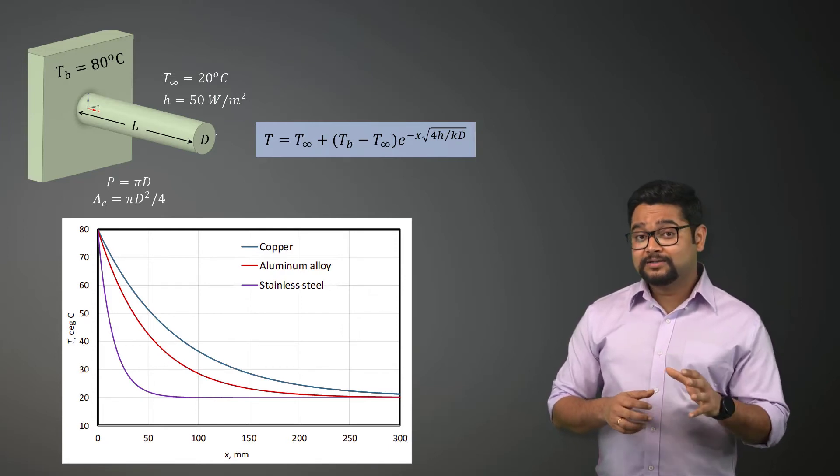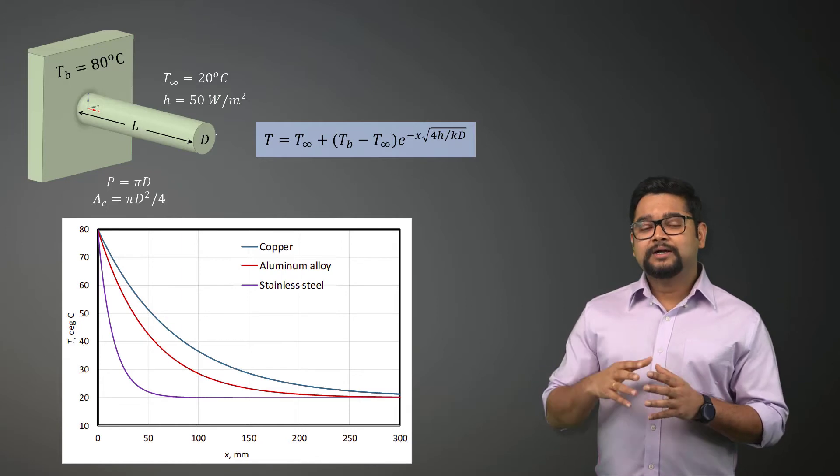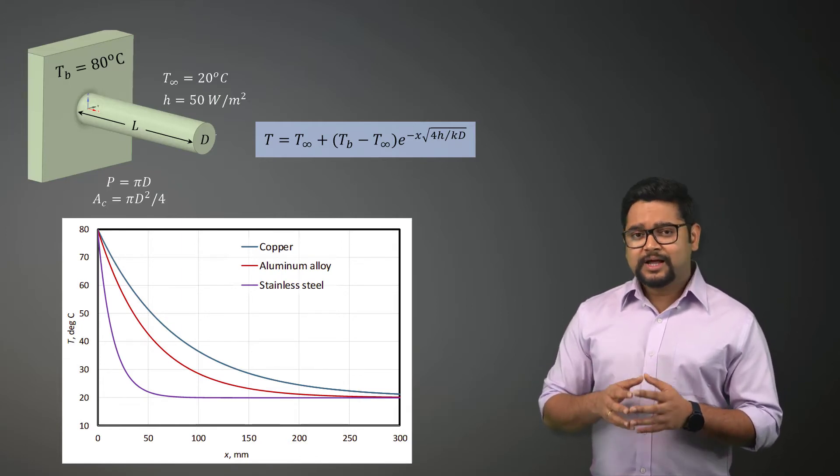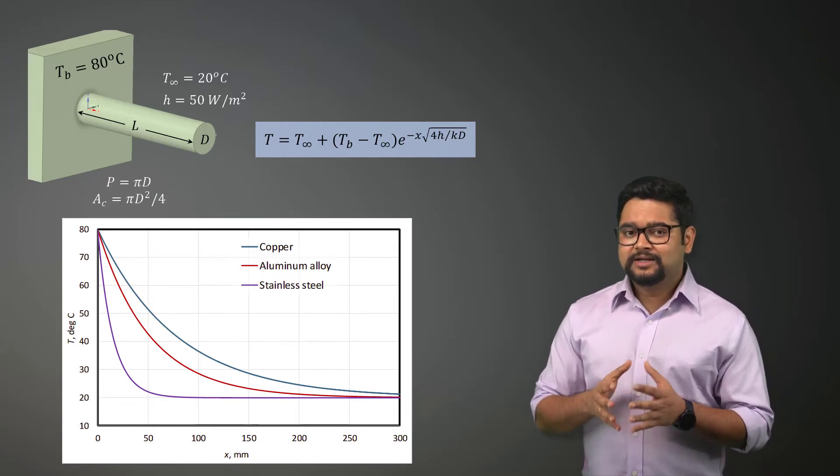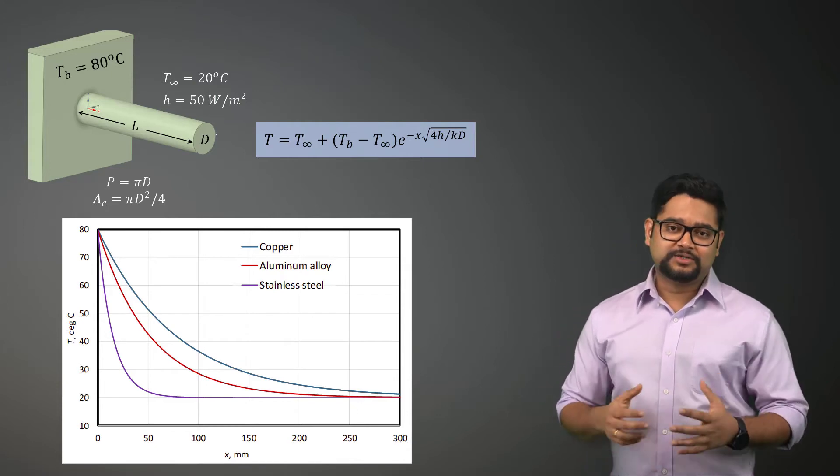Note that the temperature distribution asymptotically tends to the ambient temperature and extending fin lengths has diminishing effect on heat transfer.